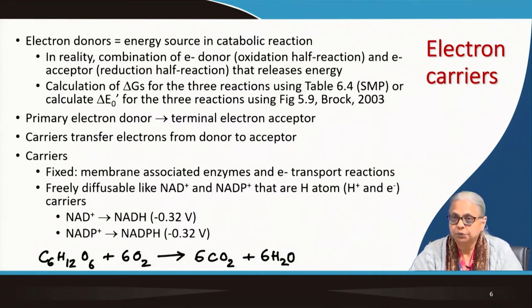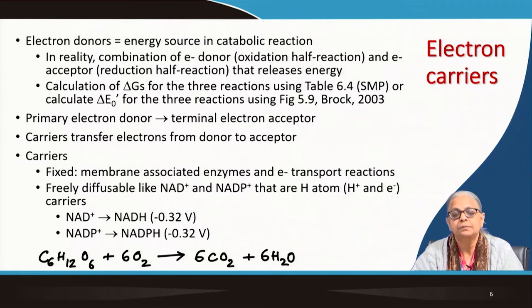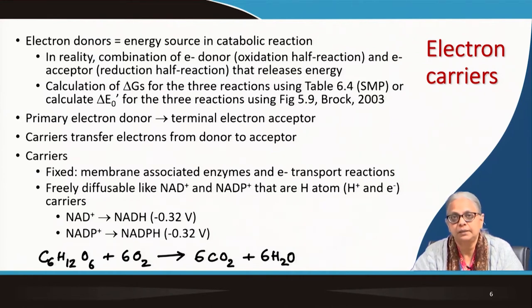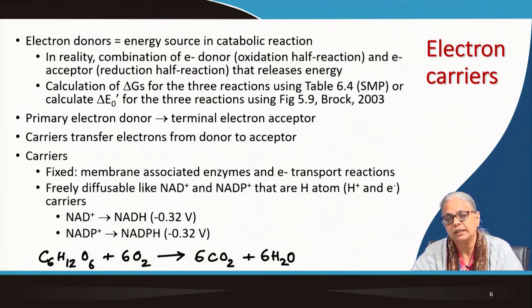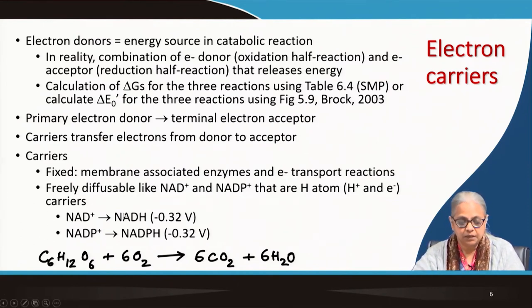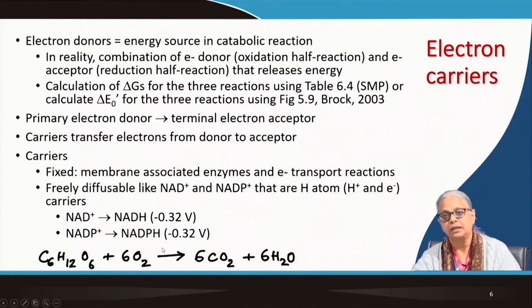There are two types of carriers: fixed and freely diffusible. Fixed carriers are the membrane-associated enzymes that are part of the electron transport reactions. Freely diffusible carriers like NAD⁺ and NADP⁺ are capable of donating and accepting both protons and electrons — the entire hydrogen atom as a whole. You can see NAD⁺ going to NADH as well as NADP⁺ and NADPH.